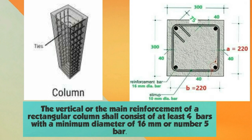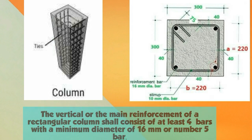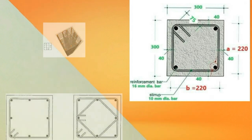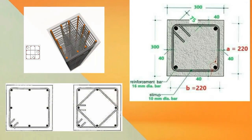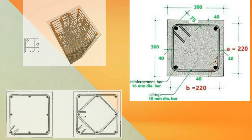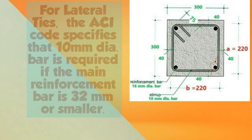According to ACI code, the vertical or main reinforcement of a rectangular column shall consist of at least four bars with a minimum diameter of 16 millimeter or number five bar. Some columns have more than four main reinforcement bars depending on the shape and size of the column — the bigger the column, the more reinforcement bars needed.